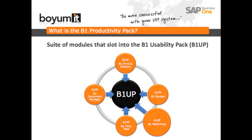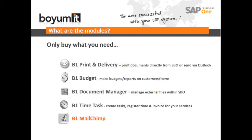The Productivity Pack is a suite of modules that are built into the B1 Usability Pack, or B1Up, and as such the B1Up must be in place for the Productivity modules to be accessible. Boyom IT has a philosophy of providing only one add-on within which you can activate additional modules to suit your specific needs. This approach means that minimal space and processing power are used up by the additional functions you require. There are now five modules available within the Productivity Package and you only need to buy the ones you require.